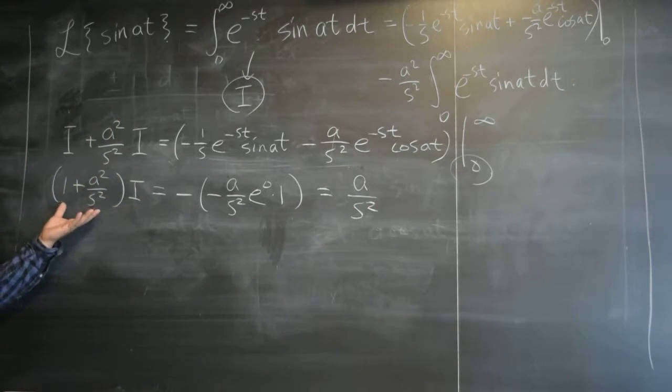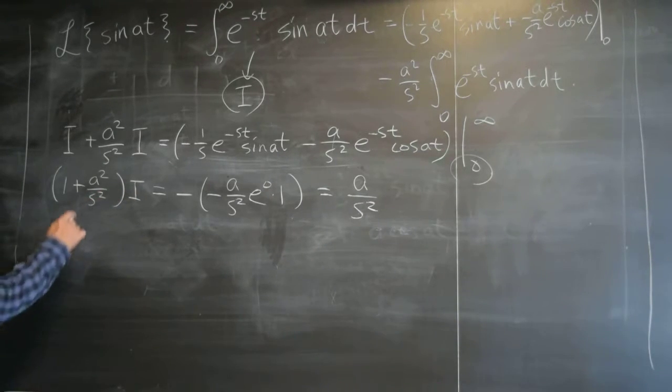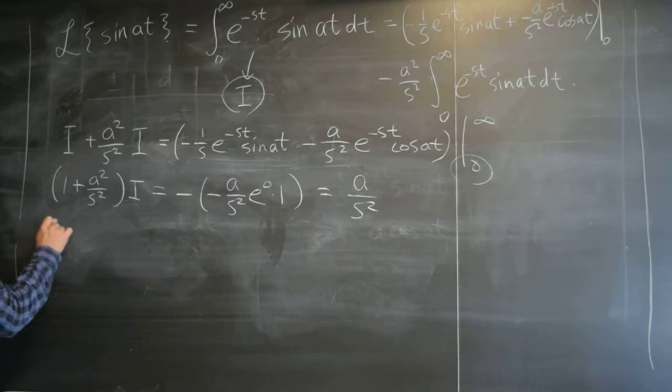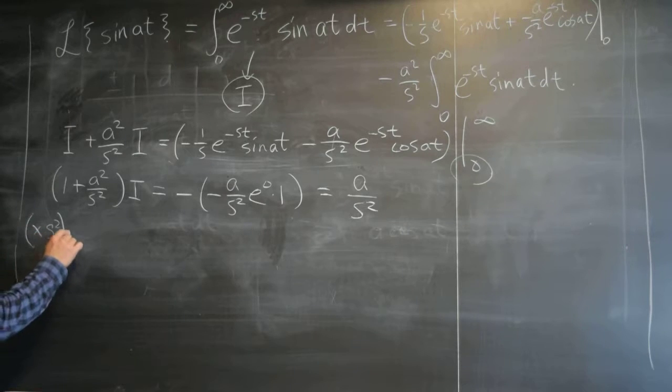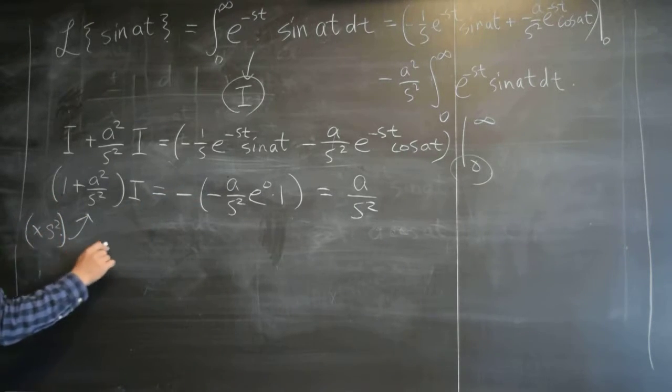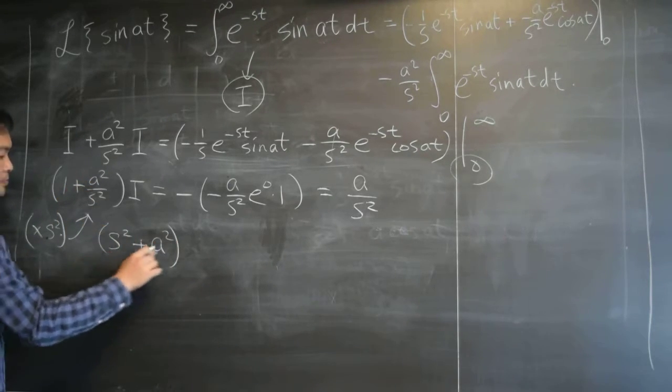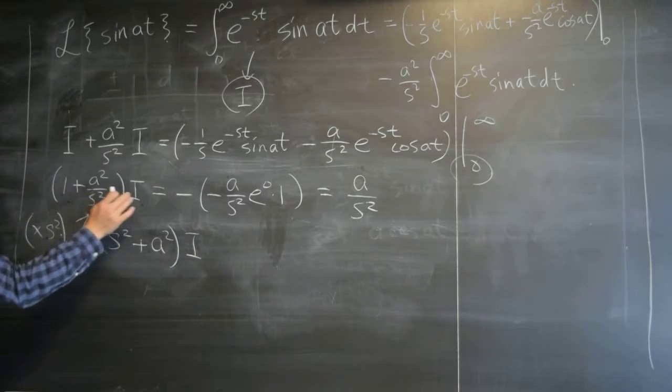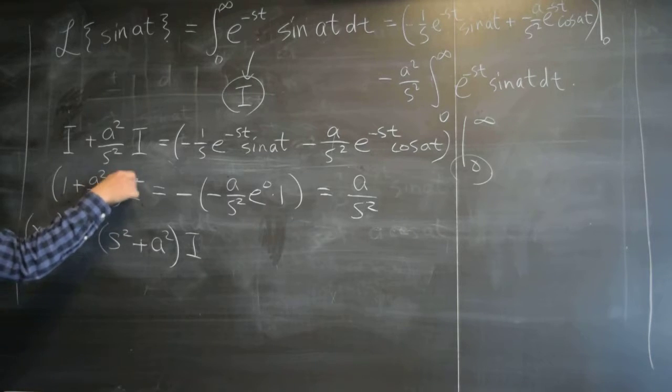Is that right? Negative negative is positive, e to the zero is one, one times one is one, so that's all you get. All right. So all I have to do now is to evaluate this integral. Now I just have to solve for i. And that's it, right? Since I don't like fractions, let's just multiply s squared both sides.